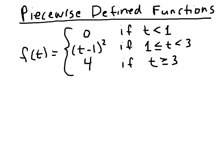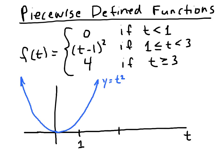Before we look at the graph of the whole function, let's take a moment to look at the second part — t minus 1 squared. The blue here indicates the graph of y equals t squared, and t minus 1 quantity squared is the translation of this one unit to the right, shown here in green. So the green is y equals t minus 1 squared. But looking at the definition of the function,